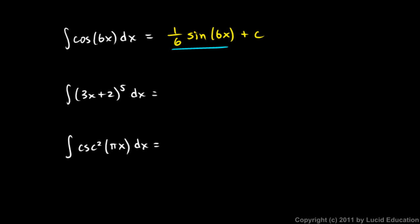Now you can see that if you differentiate that, the derivative would be 1/6 times the derivative of sine of 6x, which is cosine 6x, times the derivative of the inner function by the chain rule — times 6. The 6s cancel out, leaving us with cosine 6x, which is what we want. That's why we introduced that 1/6.